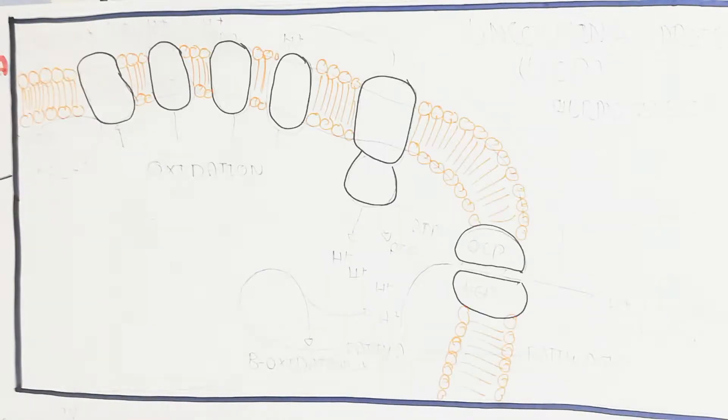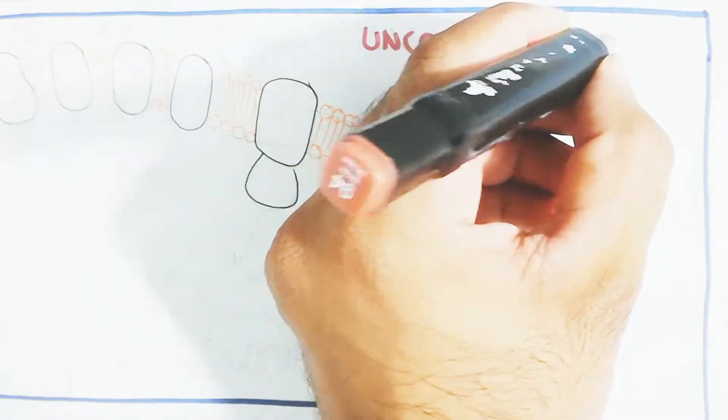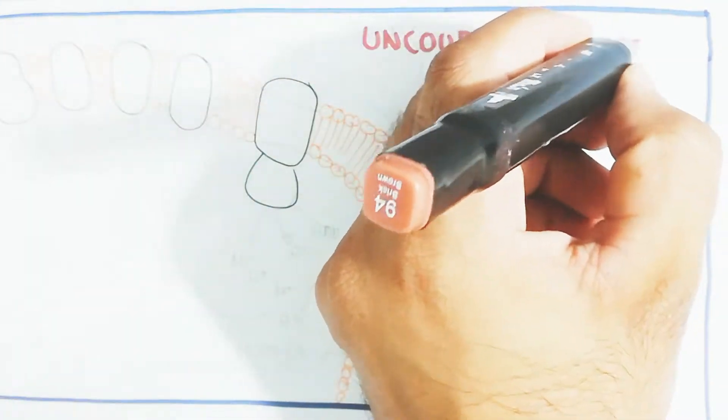In this way we will understand the basic concept. This is the inner mitochondrial membrane containing complexes. These four complexes and the fifth is the ATP synthase enzyme.